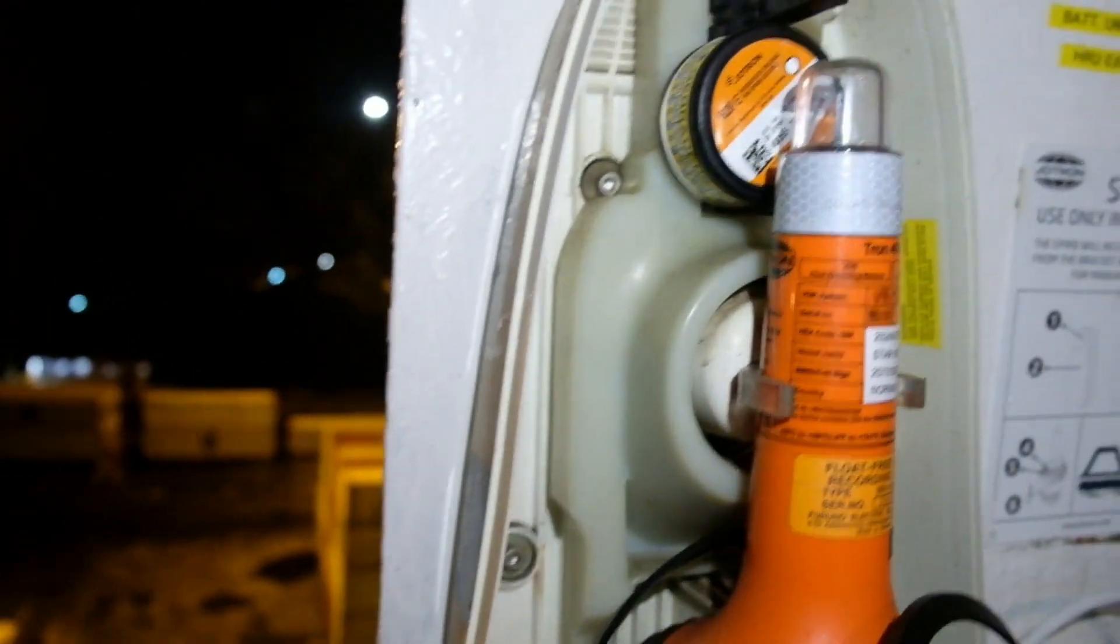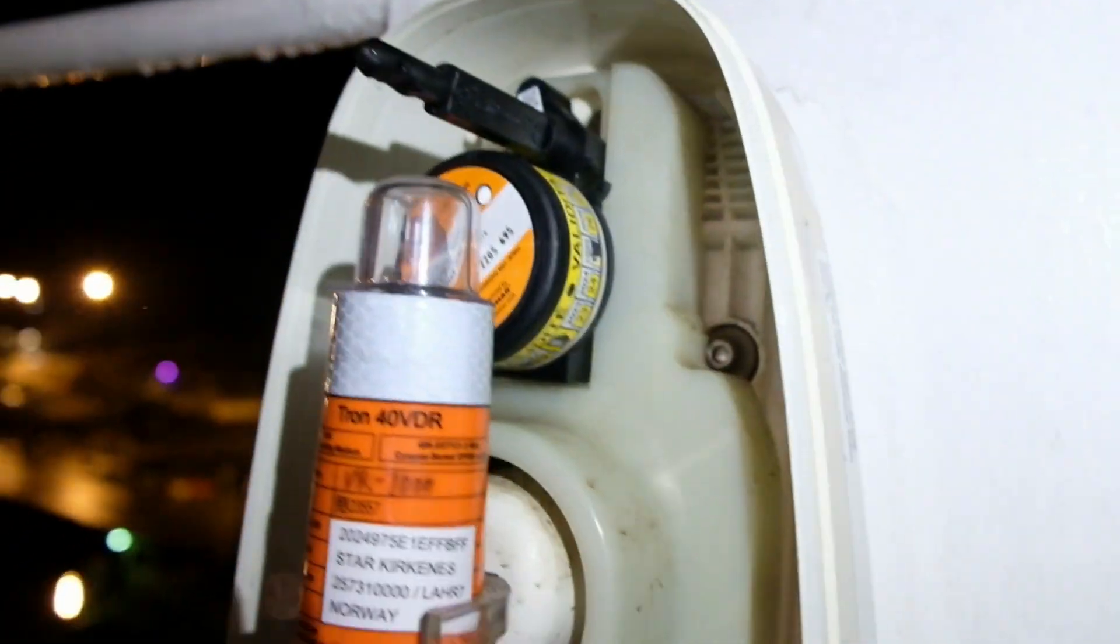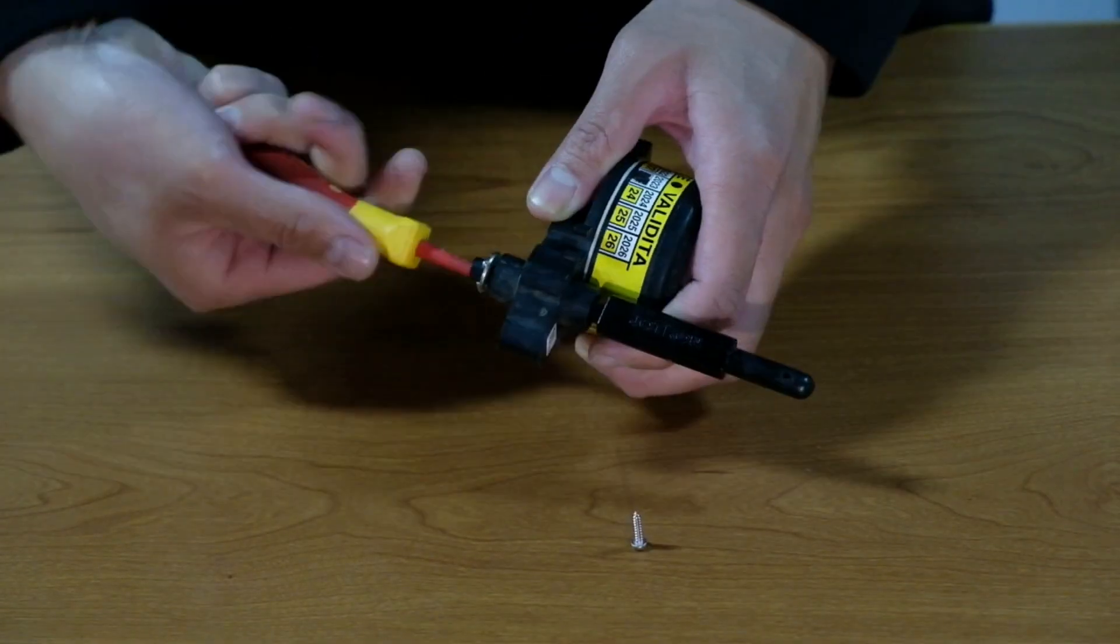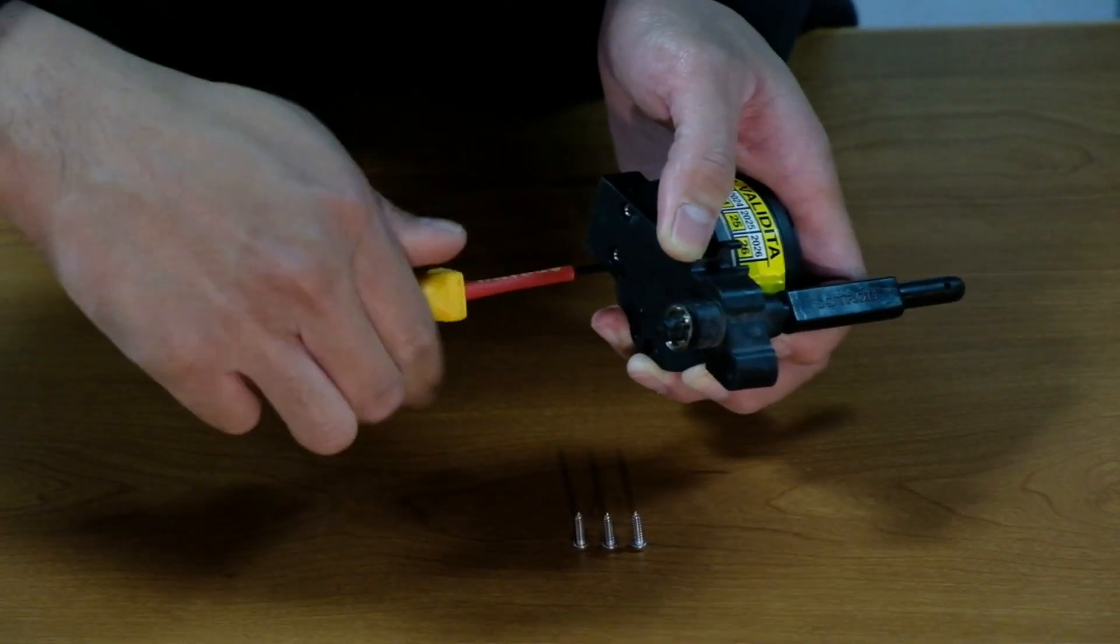On our EPIRB HRU, instead of the strong rope, we have this plastic bolt rod that secures the radio beacon. Although different in design, concept stays the same.